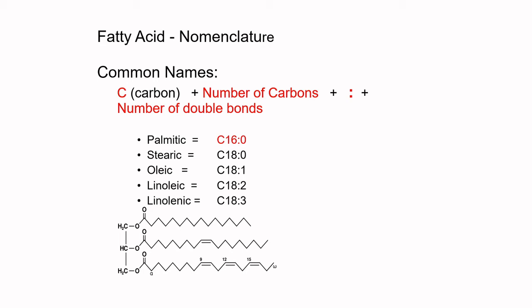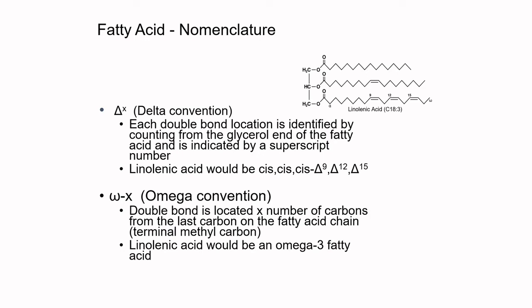How do we name these? We name them by the number of carbons with a colon and then the number of double bonds — we summarized this already. The delta convention — again, these slides are courtesy of Lori Jones at Richardson — is where we're naming starting at the glycerol end. So for linolenic acid we've got cis delta-9, delta-12, delta-15. In the omega convention we would say omega-3 because we're counting in carbon one, two, three. You'll also commonly see omega-6 and omega-9.